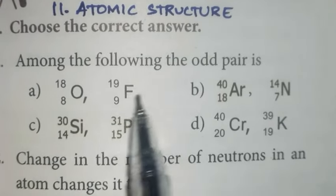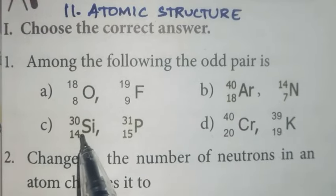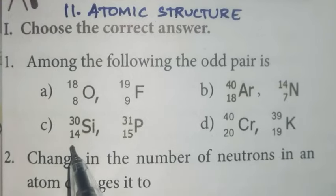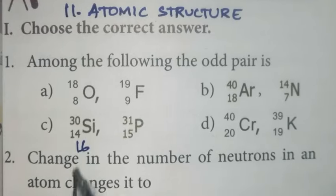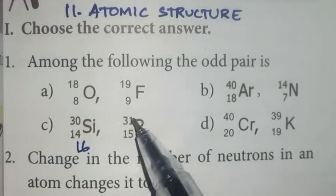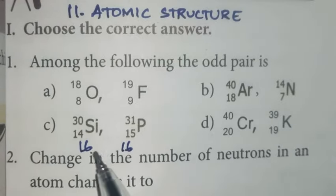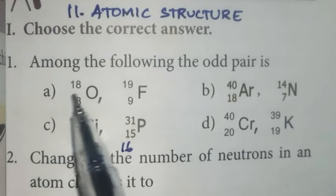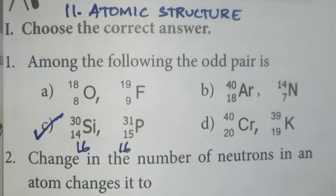First one: among the following, the odd pair is silicon-phosphorus. Silicon has atomic number 14 and mass number 30. If you subtract, we get 16 neutrons. In phosphorus, if you subtract 15 from 31, we get 16 neutrons. So the neutron number is the same. These are examples of isotones. Not in options A, B, or D. So option C is the right answer.